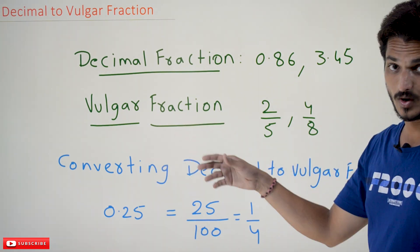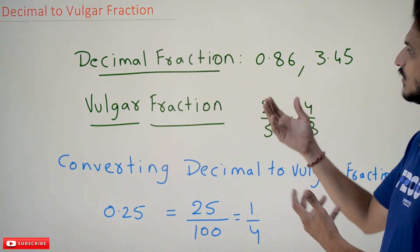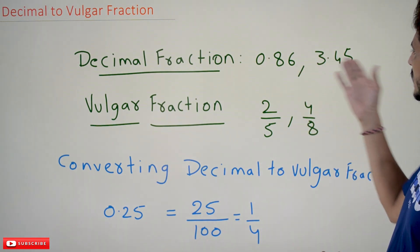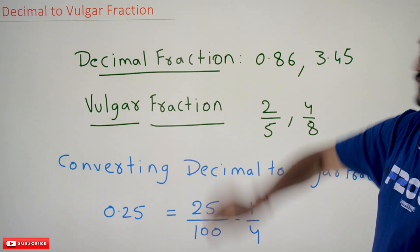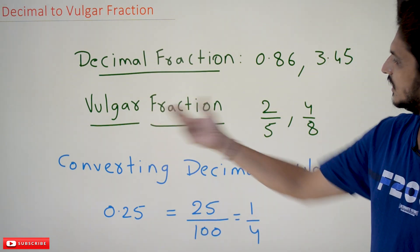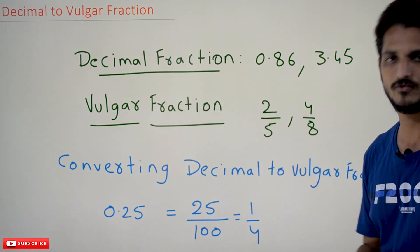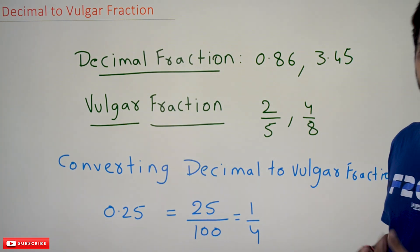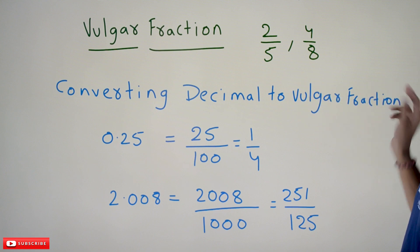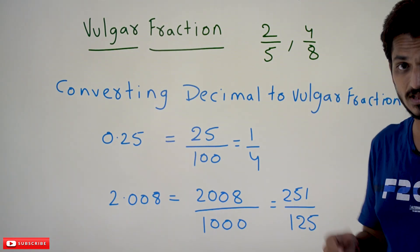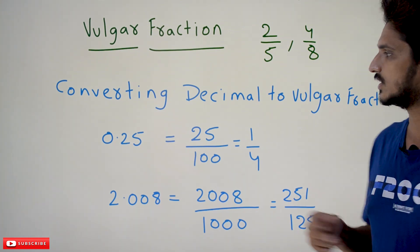Coming to today's class: decimal to vulgar fraction. First we have to understand what decimal fraction means. If you write decimal values like 0.86 or 3.45, we call these decimal fractions. If you write a fraction in the form 2/5 or 4/8, we call it a vulgar fraction. The concept is converting a decimal fraction to its equivalent vulgar fraction.